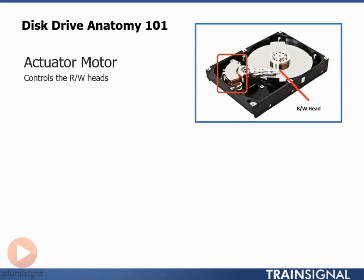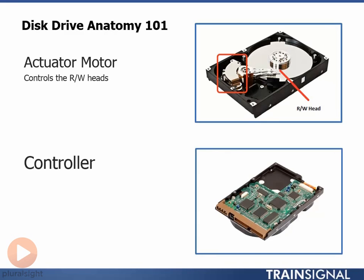Let's take a look at what controls the read-write heads. First up is the actuator, sometimes called the head actuator. If we take a look at the image at the top right-hand corner of the slide, what we've been referring to as the heads or read-write heads is actually just the very tip of the actuator arm. The heads sit right on the end of the actuator arm, and it's the actuator that is responsible for the physical positioning and movement of the read-write heads.